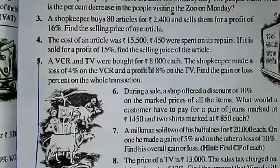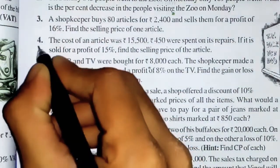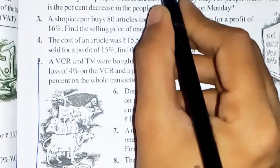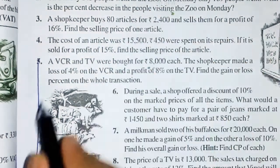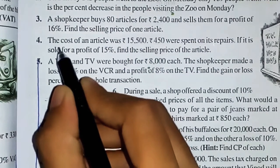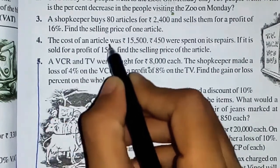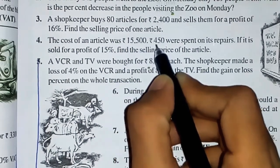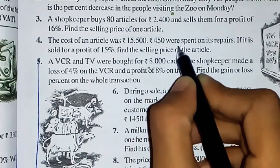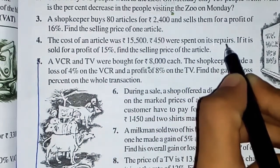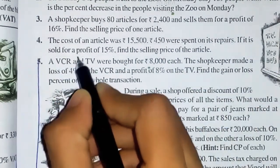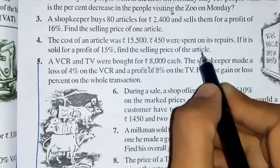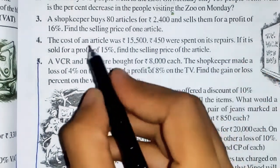Hello students, now we will discuss question number 4 of exercise 8.2, chapter Comparing Quantities. The question is: the cost of an article was ₹15,500 and ₹450 were spent on its repairs. If it is sold for a profit of 15%, find the selling price of the article.